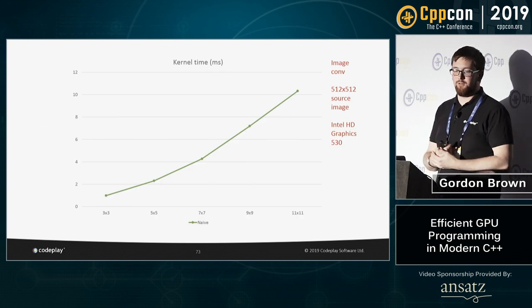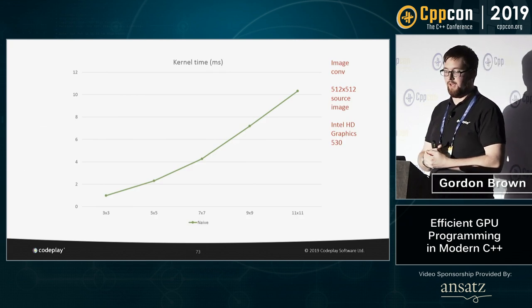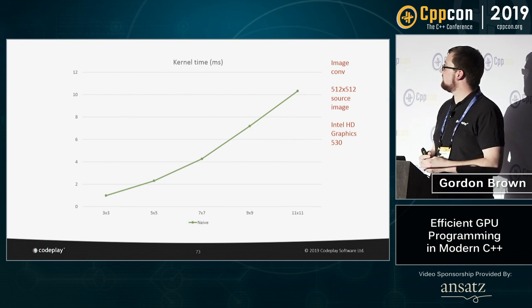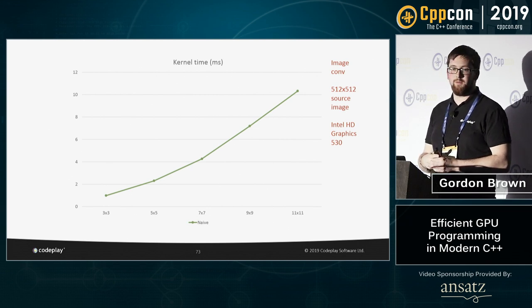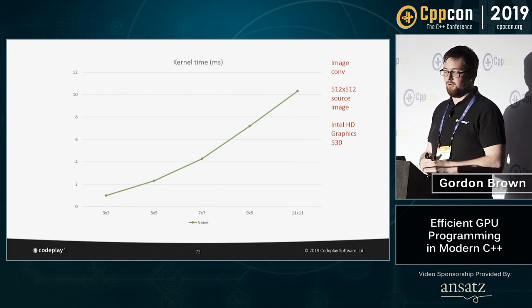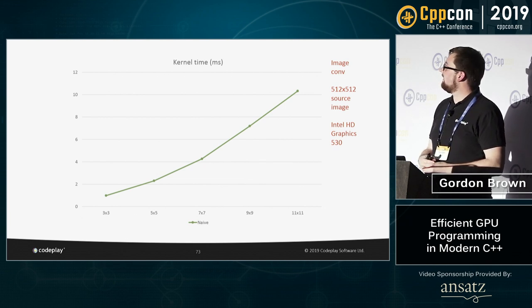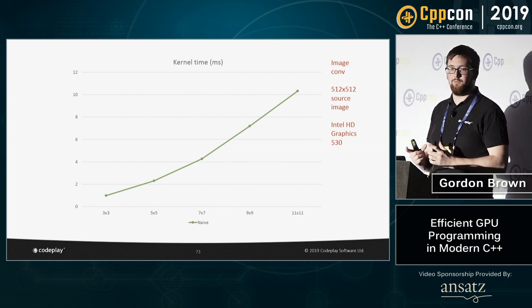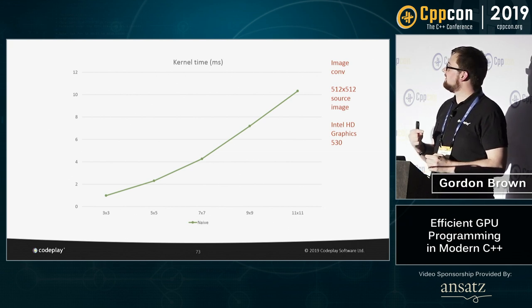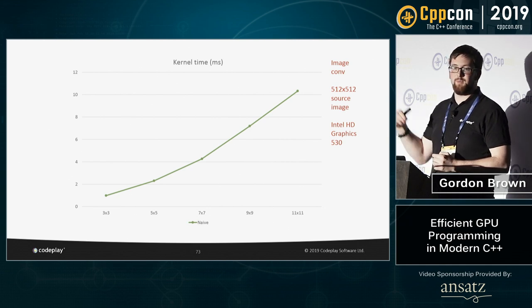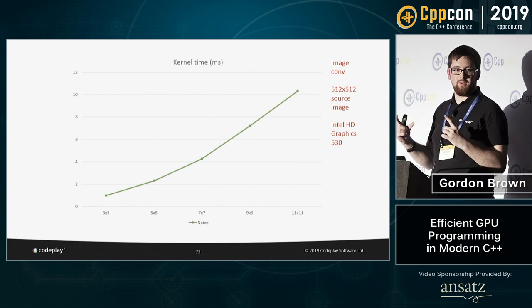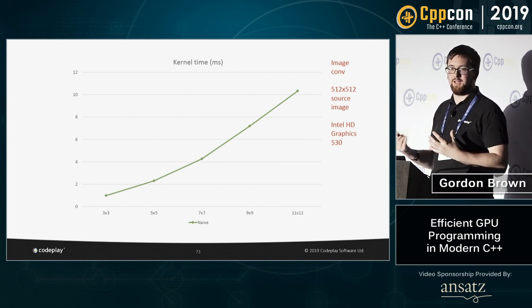Here's a graph of kernel times for that naive kernel running image convolution on a 512×512 image on Intel HD graphics. Across various convolution sizes, the kernel time grows exponentially as the convolution size gets larger — because as the convolution grows, the amount of computation is growing exponentially.